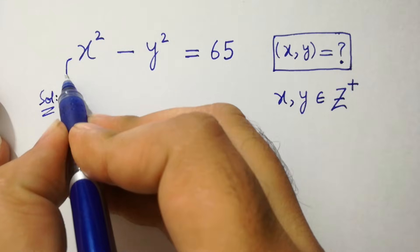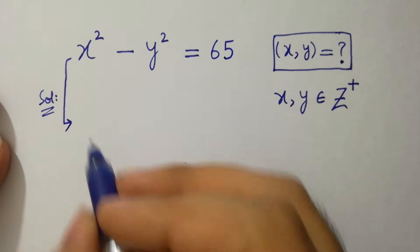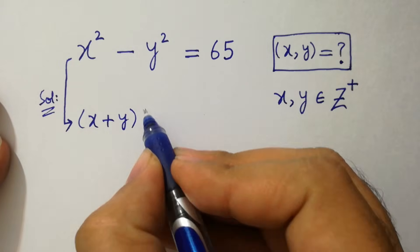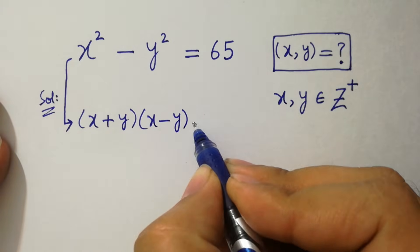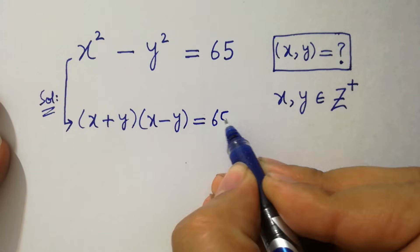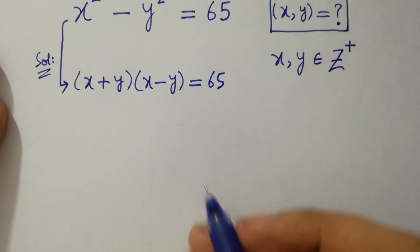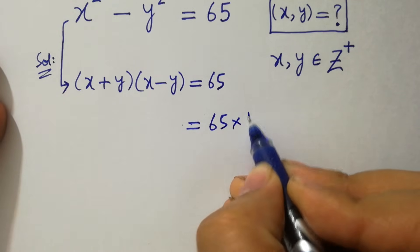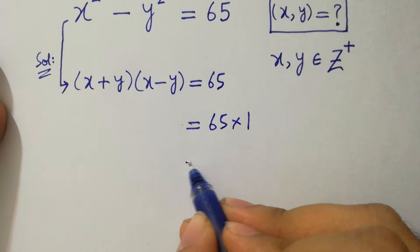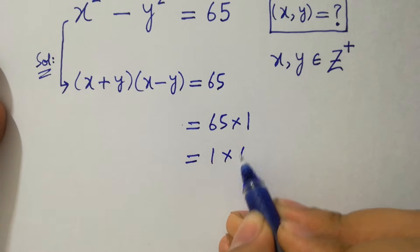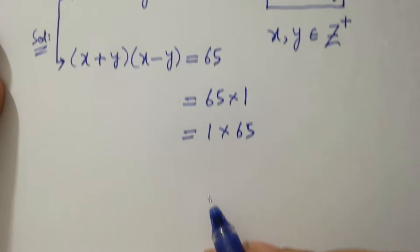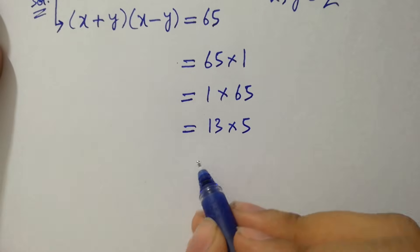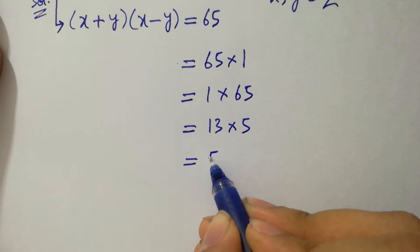This problem is the same as (x plus y)(x minus y) equals 65. We have choices here: 65 times 1, or 1 times 65, or 13 times 5, or 5 times 13.